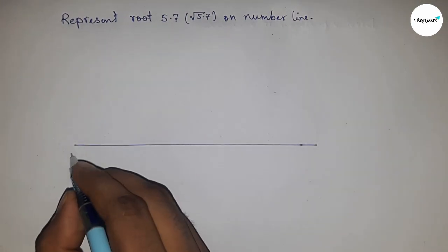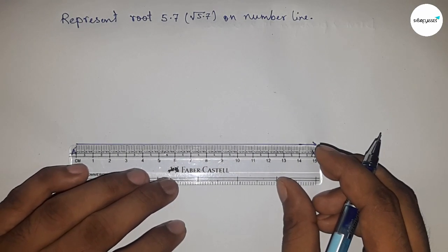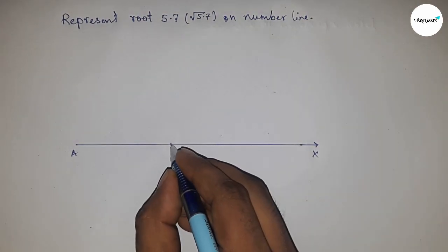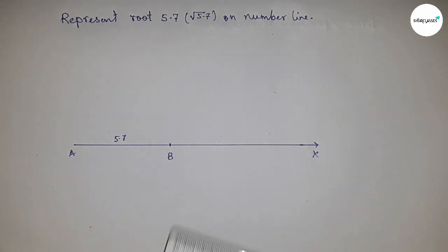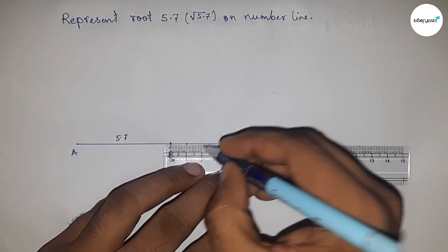Next, we take a length of 5.7 centimeters. This is 5.7 centimeters. This is point B, so AB equals 5.7 centimeters. Next, we mark the numbers on the line from B to X using a scale.